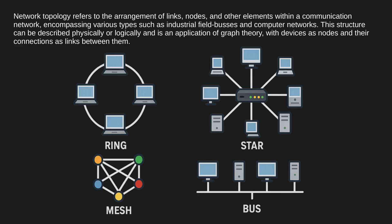Network topology refers to the arrangement of links, nodes, and other elements within a communication network, encompassing various types such as industrial field buses and computer networks. This structure can be described physically or logically, and is an application of graph theory, with devices as nodes and their connections as links between them.